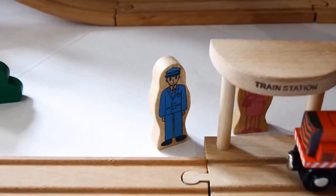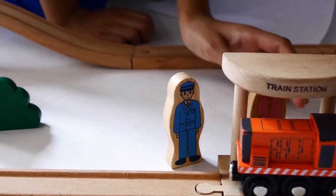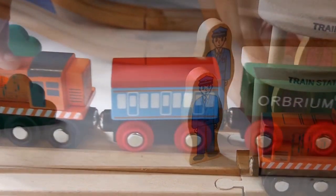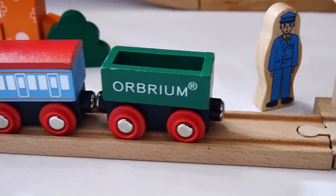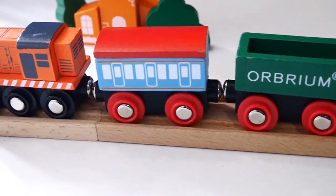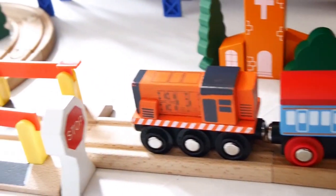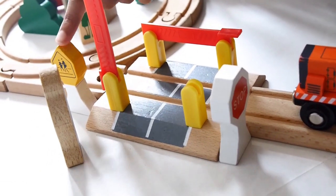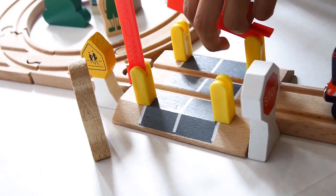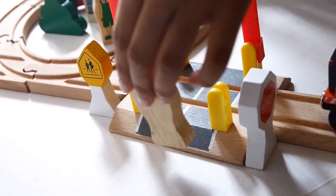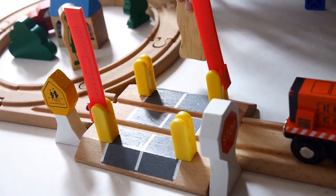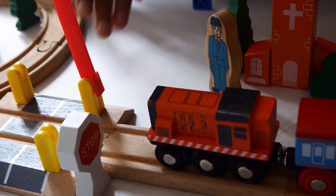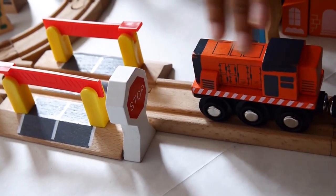Here's the train station. Oh look, here's the red stop sign. I must slow down. And there is the yellow walk sign that tells the person when to walk. Now I can go.